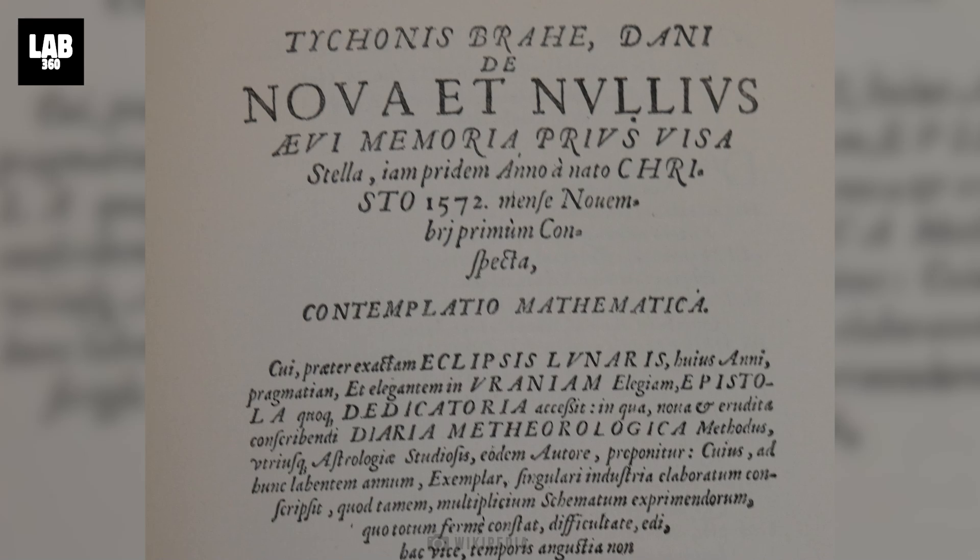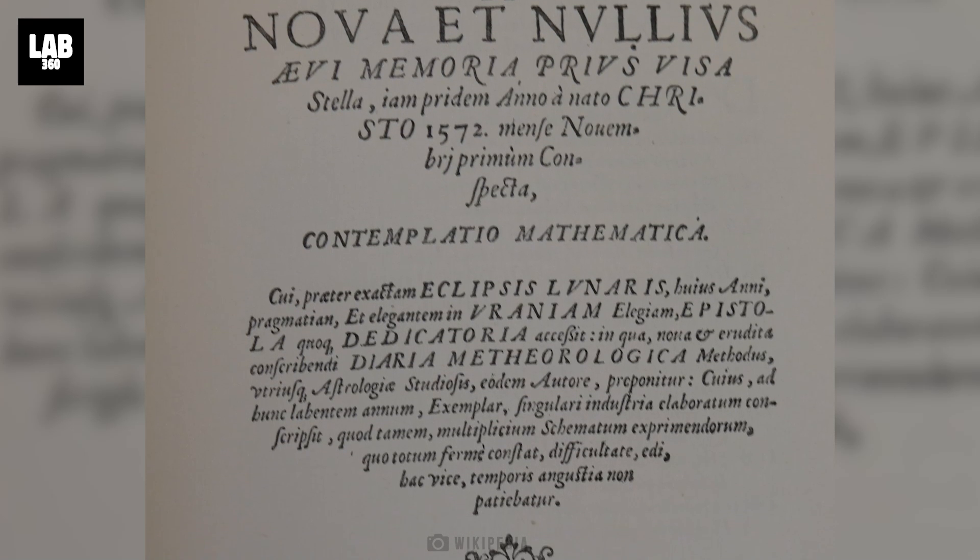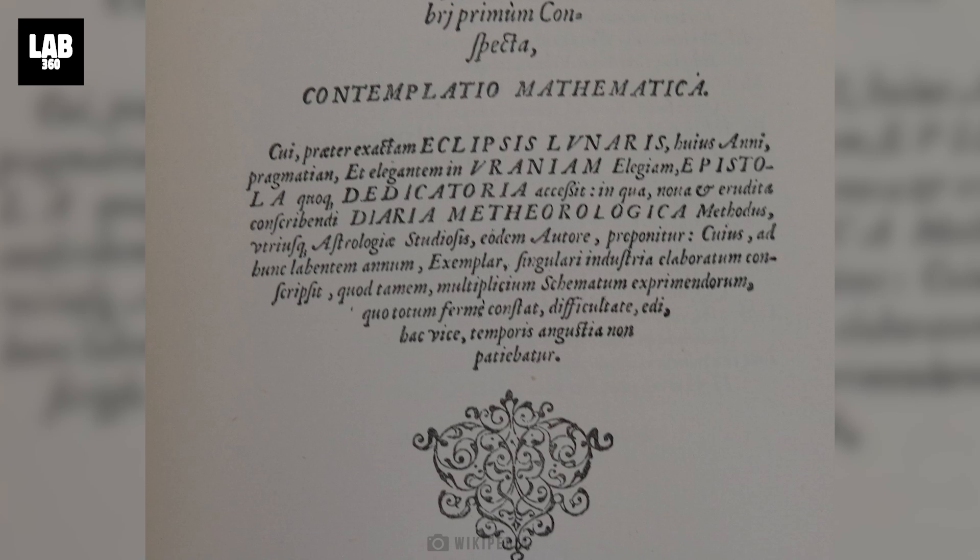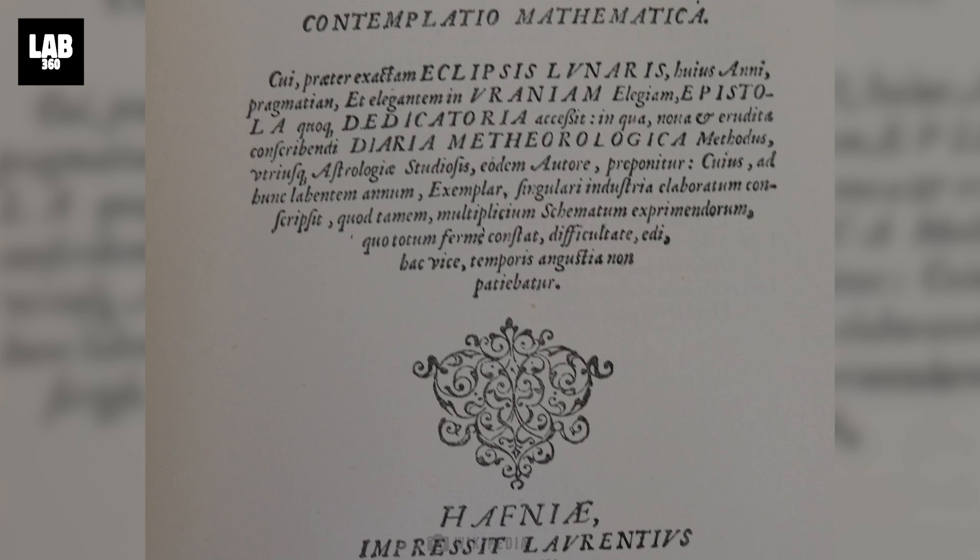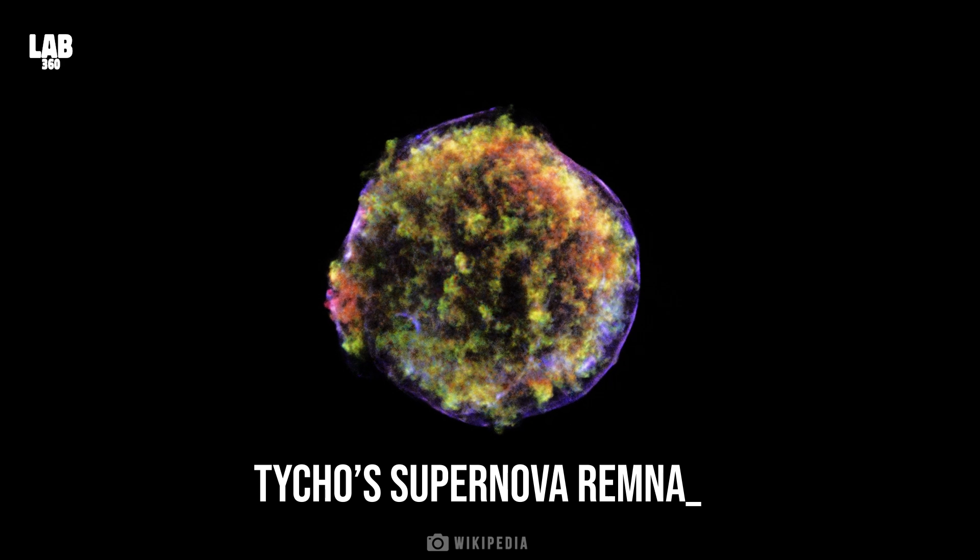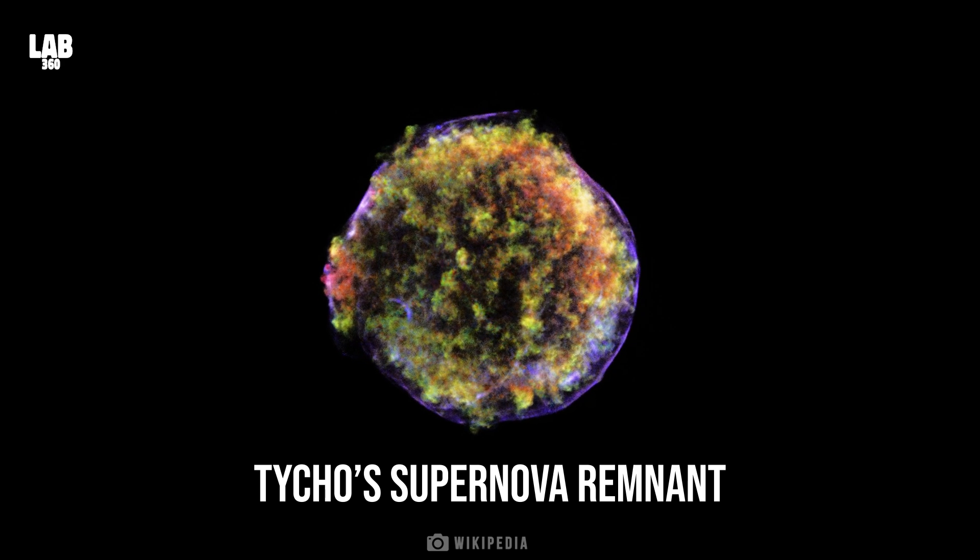He got his observations about the star published in a small book, translated from Latin to concerning the new and previously unseen star, in 1573. SN 1572 is also referred to as Tycho's Nova in his honor.